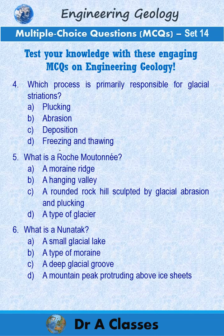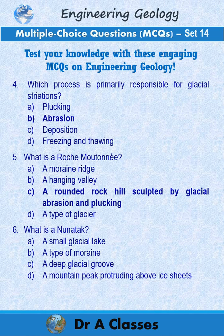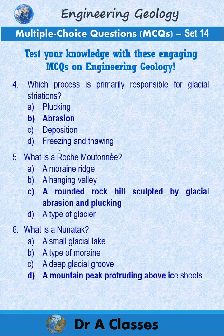Answer to question 4 is B: Abrasion. Answer to question 5 is C: A rounded rock hill sculpted by glacial abrasion and plucking. Answer to question 6 is D: A mountain peak protruding above ice sheets.